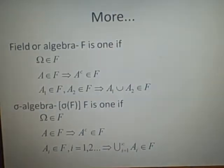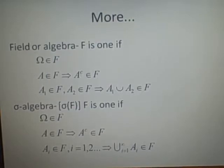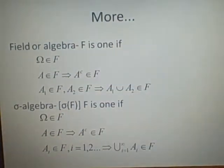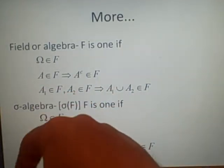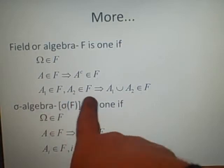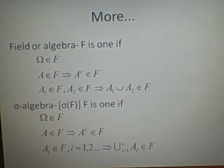These are our last two definitions. A field or algebra—it will be called different things. F is one if Ω is an element of F. If A is an element of F, then the complement is an element of F. And for two elements which are elements of F, so A₁ and A₂, then the union has to be in F.